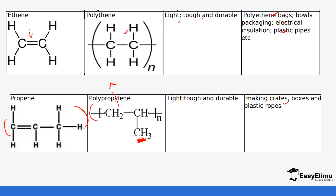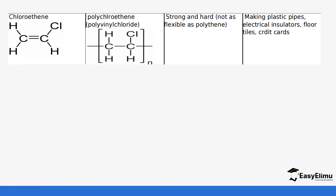Chloroethene forms polychloroethene, commonly known as PVC or polyvinyl chloride. PVC is very common — it is used to make plastic pipes, used as an insulator, and used to make floor tiles and wet clothing. It is very strong and durable.